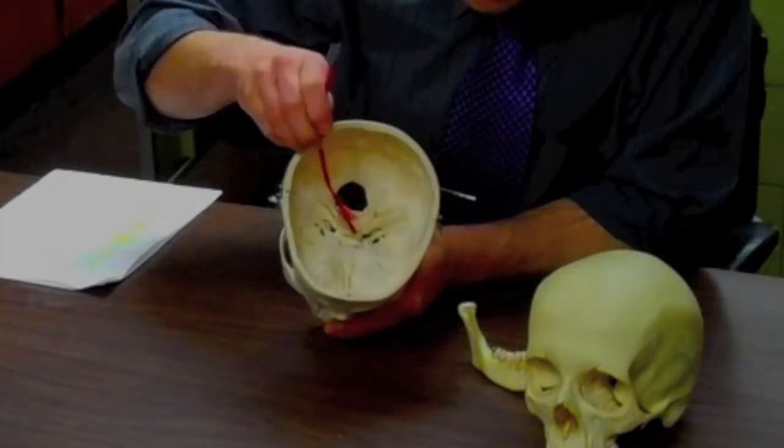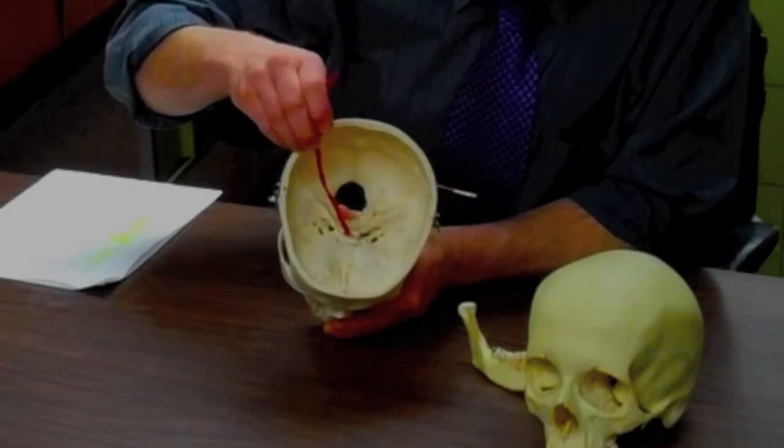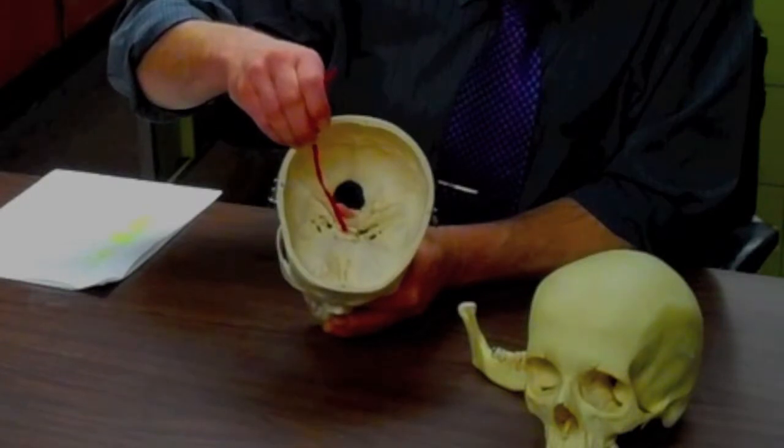The interesting piece in the middle is called the sella turcica, Turkish saddle. The pituitary gland sits in here.